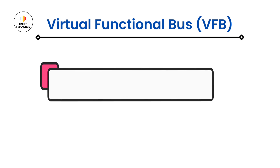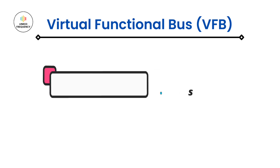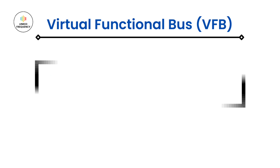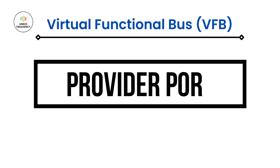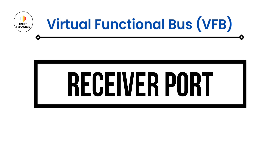The Virtual Functional Bus module components communicate with each other through ports. There are two types of ports: the provider port and the receiver port. Provider ports are used by a software component to provide data or services to other software components — provided ports implement senders and servers. On the other hand, receiver ports are used by the software component to require data or services from other software components. Required ports implement receivers and clients.